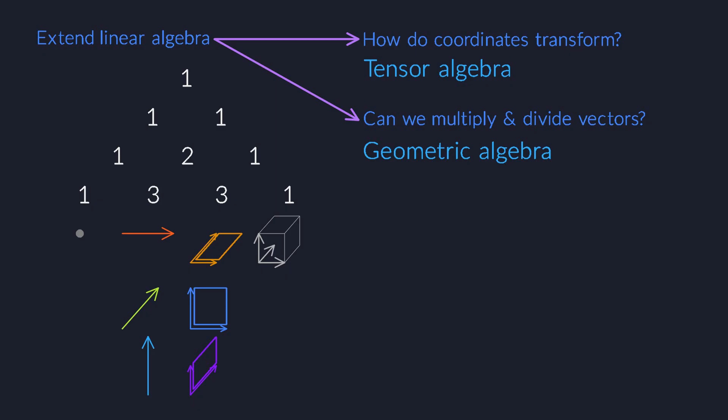All those multivectors live in a vast space whose dimension is always a power of 2, and that is a consequence of the Pascal triangle. We will unfold many of these kinds of connections.